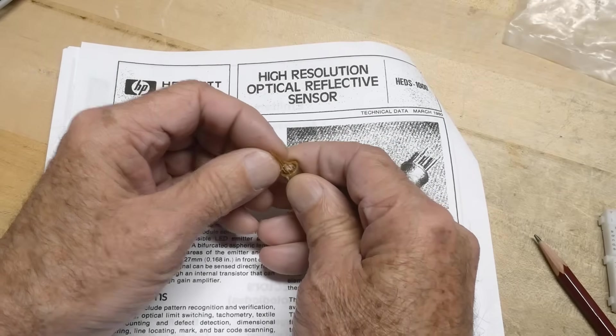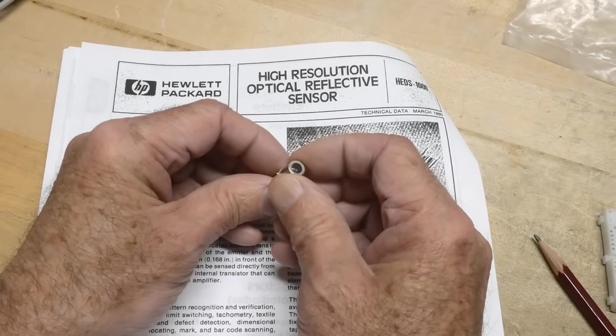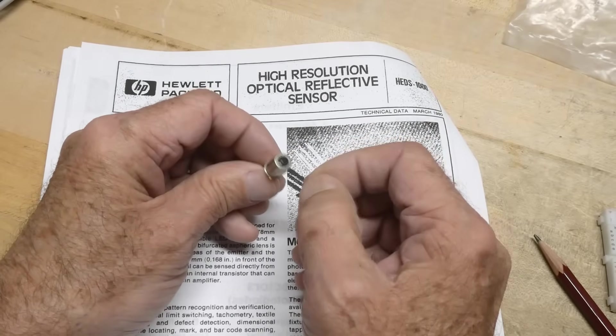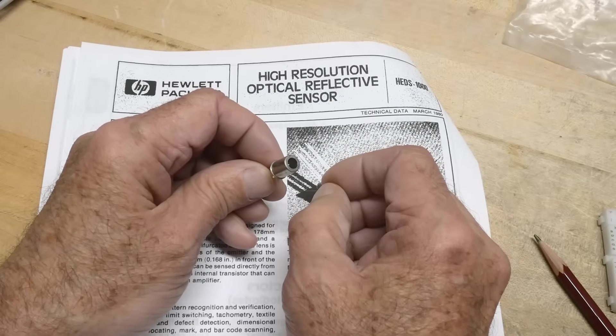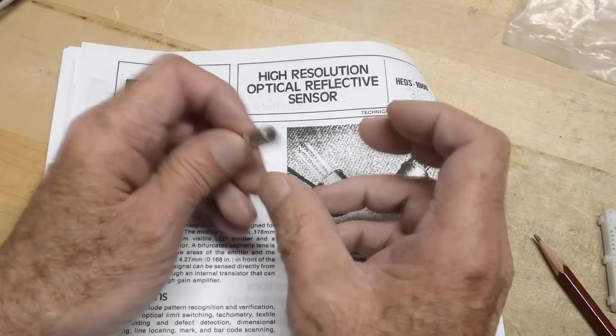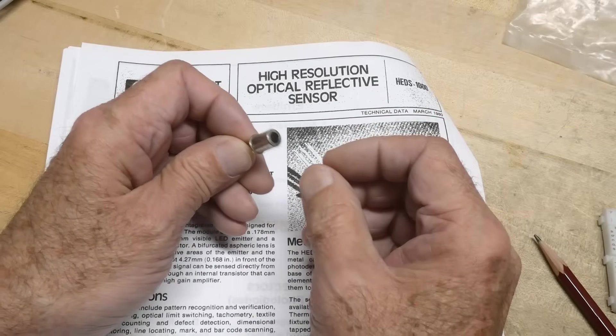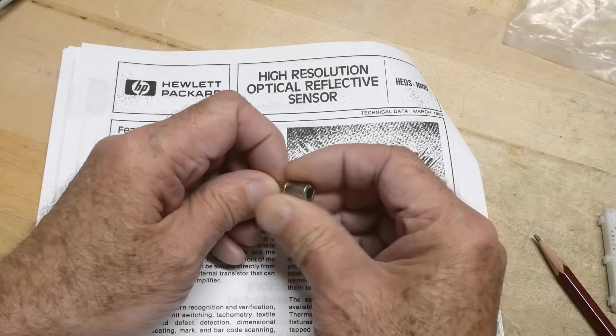So the package is hermetically sealed, which is nice. And then inside the package you'll see there's two different integrated circuits. One is an LED and one is a photodiode. But these two objects are actually quite custom for this particular part.